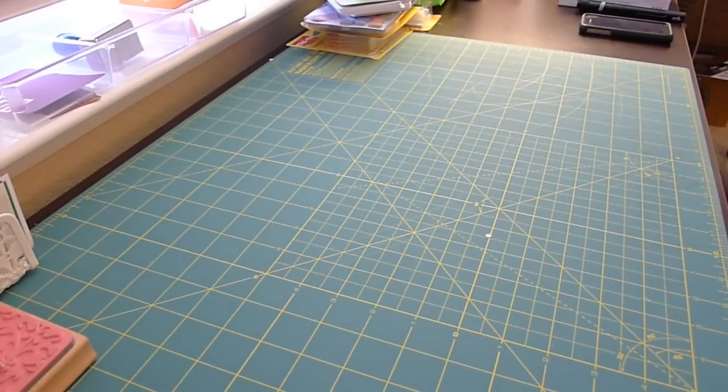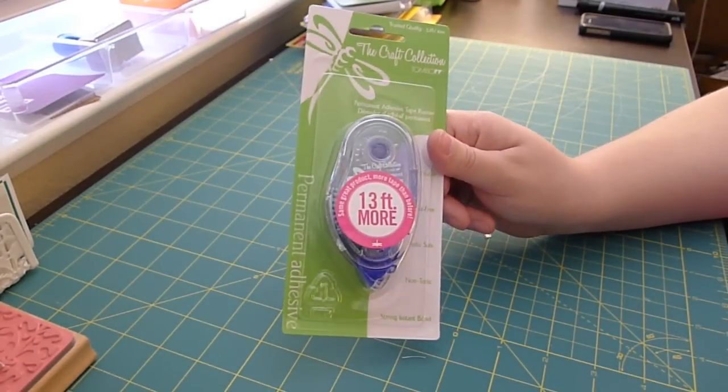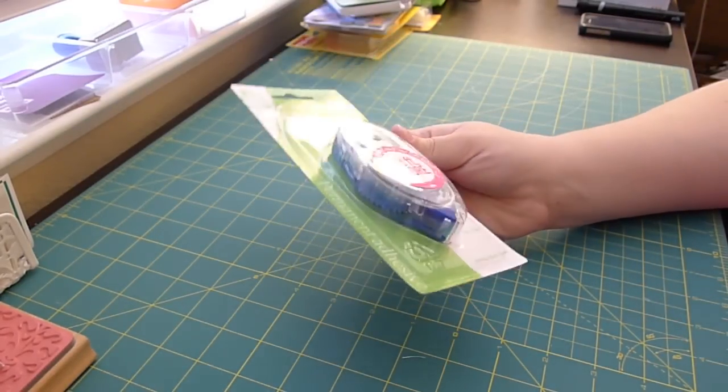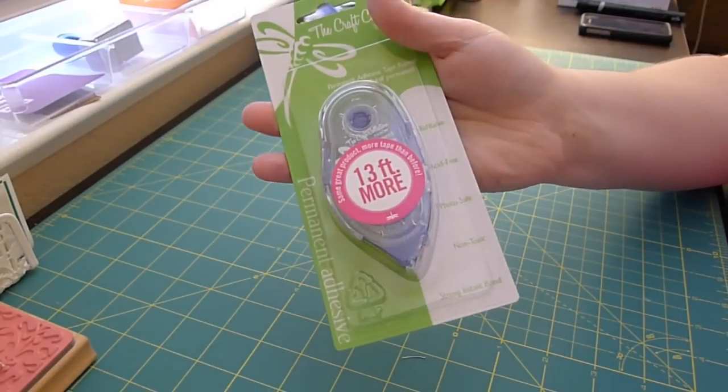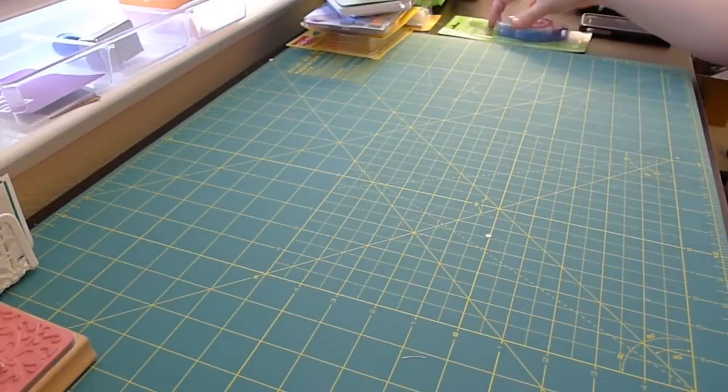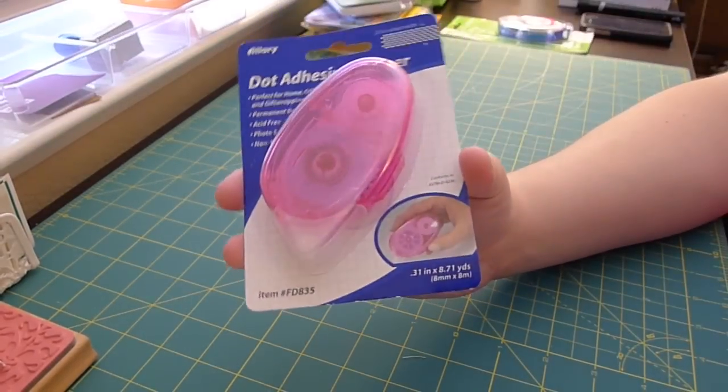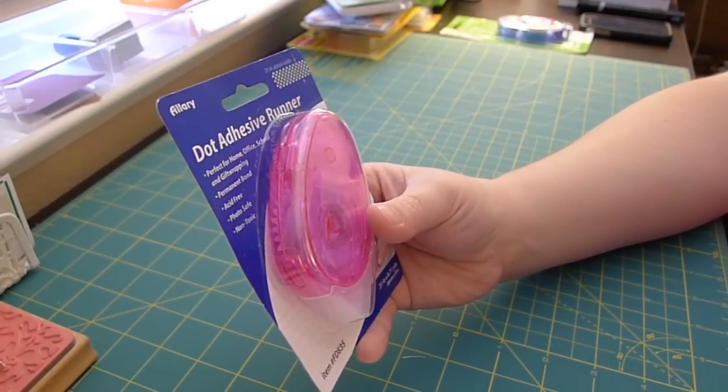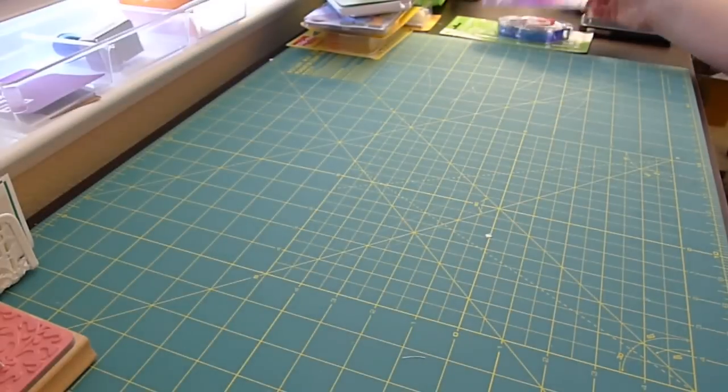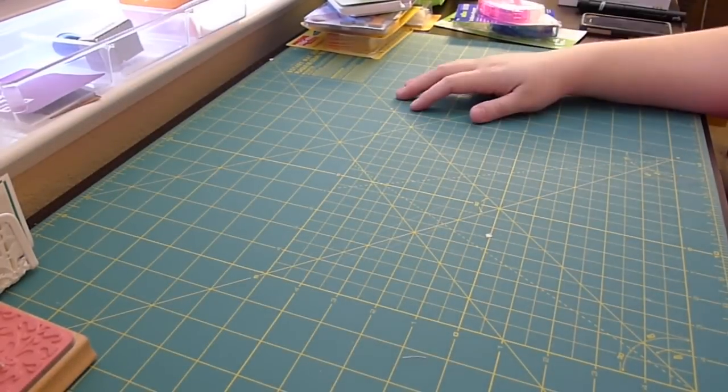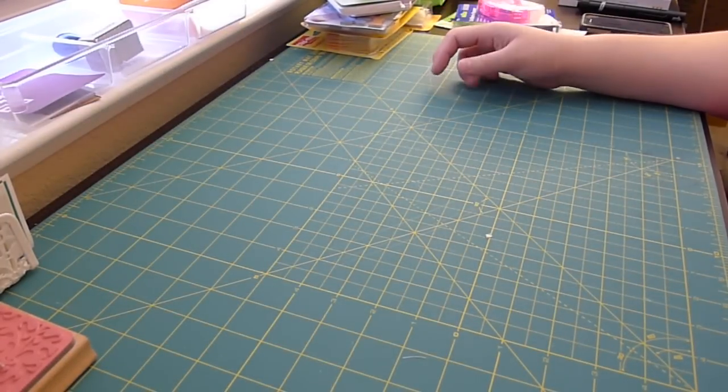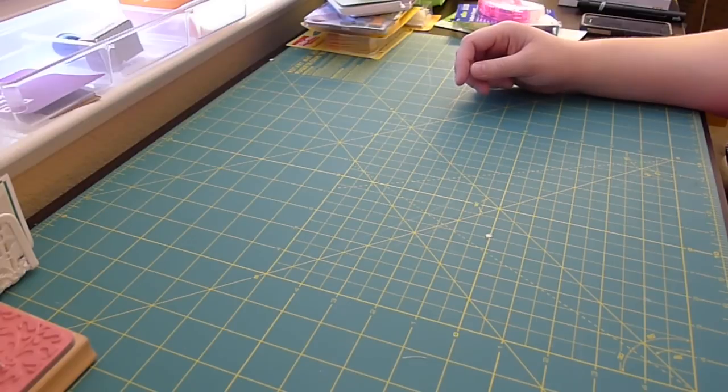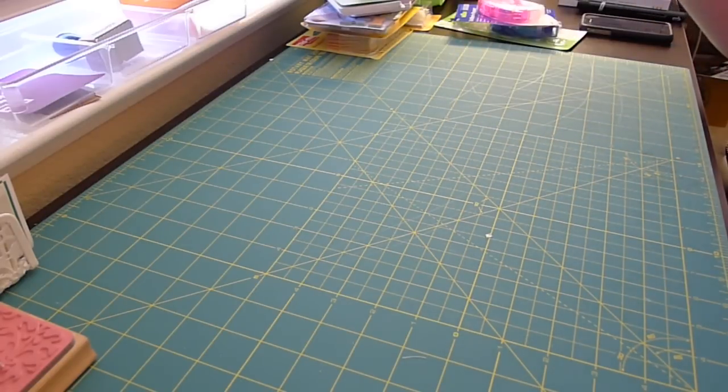Then, I went to Joann's, because I needed a few things. I needed a new adhesive runner, because I love my ATG gun, but just for putting in my smash basket, I wanted that. And then, I saw that they had these for a dollar, and they're the dot adhesive, so I figured I'd pick one of these up and see how it works. Joann around here does not have a great adhesive selection. That was basically the only tape runners they had in the whole store.